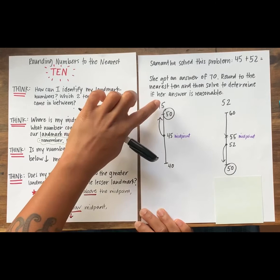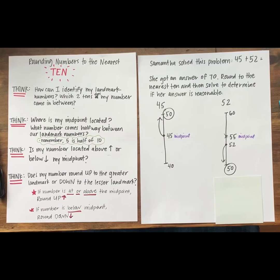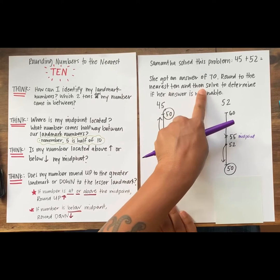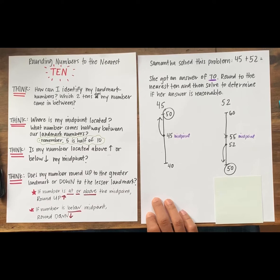Team, are we done answering this question? Now that we've rounded these two numbers, did we answer the big question? Show me yes or no. No, we did not. This question says to round to the nearest 10 and then solve to determine if her answer of 70 is reasonable.